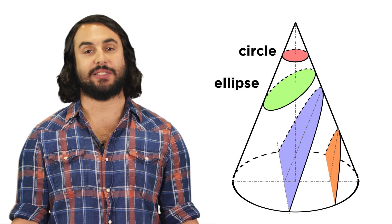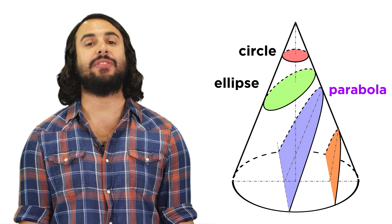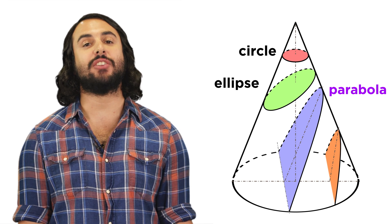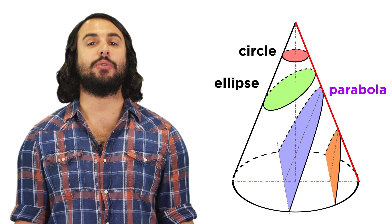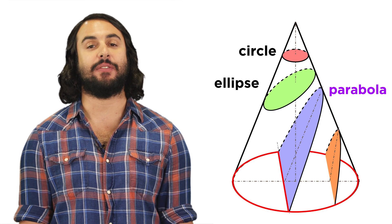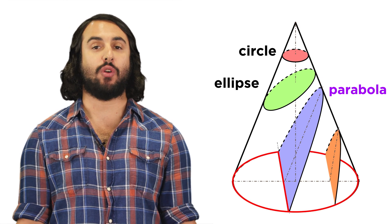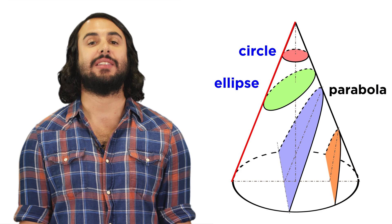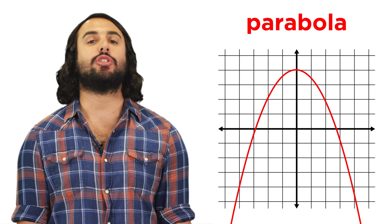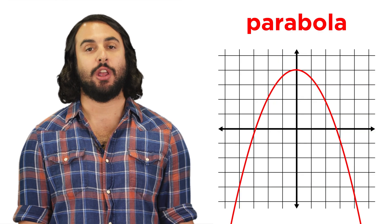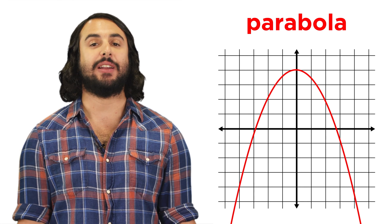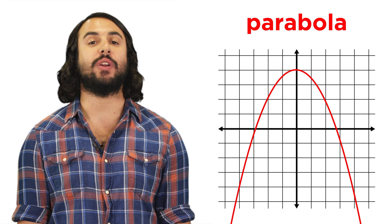Moving on to another conic section, we have the parabola. This is where a plane intersects a cone, going through the edge of the cone and cutting down to the base of that section, rather than across to the other side of the cone, like with circles and ellipses. We learned quite a bit about parabolas earlier when we first learned how to graph functions, but let's learn the rigid definition.